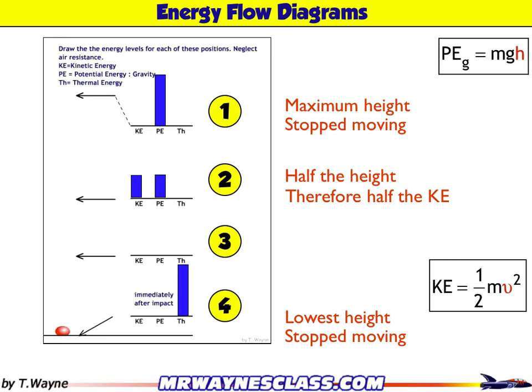So what about in between at position 3? Well, at position 3, potential energy is somewhere between halfway and zero. So I'll just kind of draw something that represents that. And the kinetic energy makes up the rest of the length of that bar. So that's the kinetic energy right there.